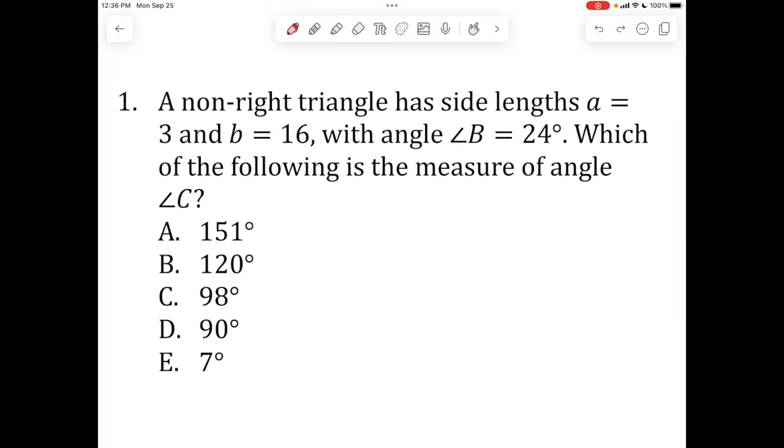Let's get right into the first problem. A non-right triangle has side lengths a equals 3, b equals 16 and with an angle of B equals 24 degrees, which of the following is the angle measure of angle C. So we're given three pieces of information, two side lengths and one angle. Let's just draw a triangle and just mind you, it's a non-right triangle. So let's say this is 3, this is 16, not drawn to scale. We have an unknown side length called C.